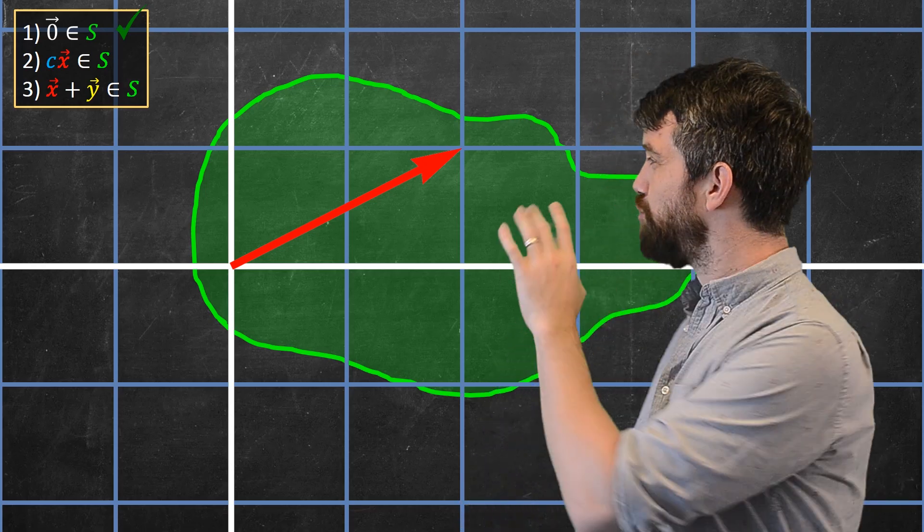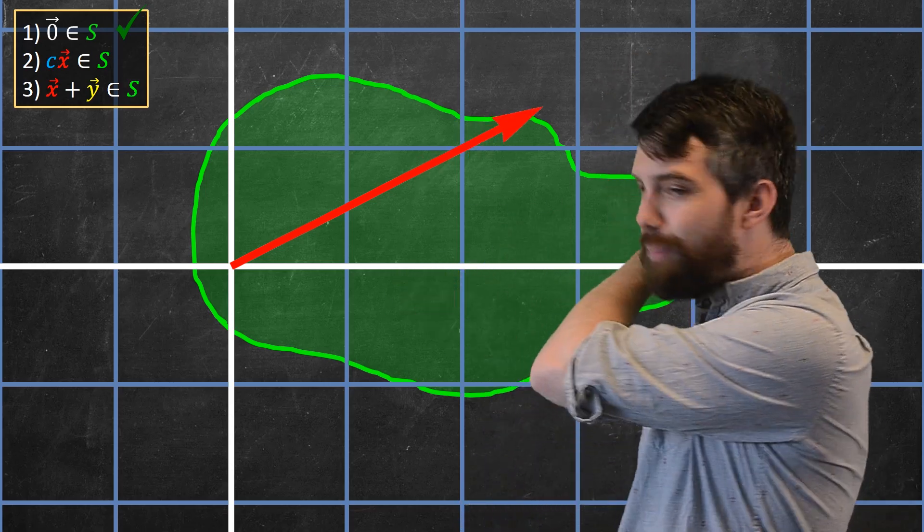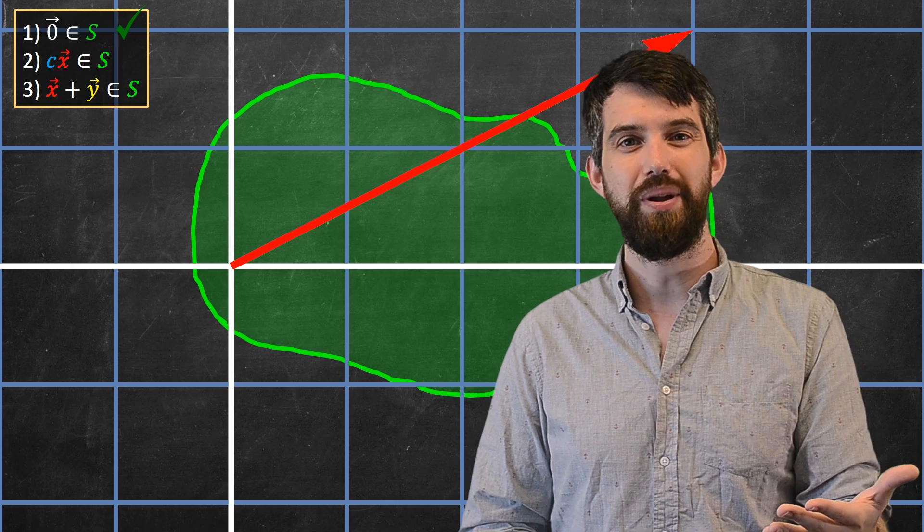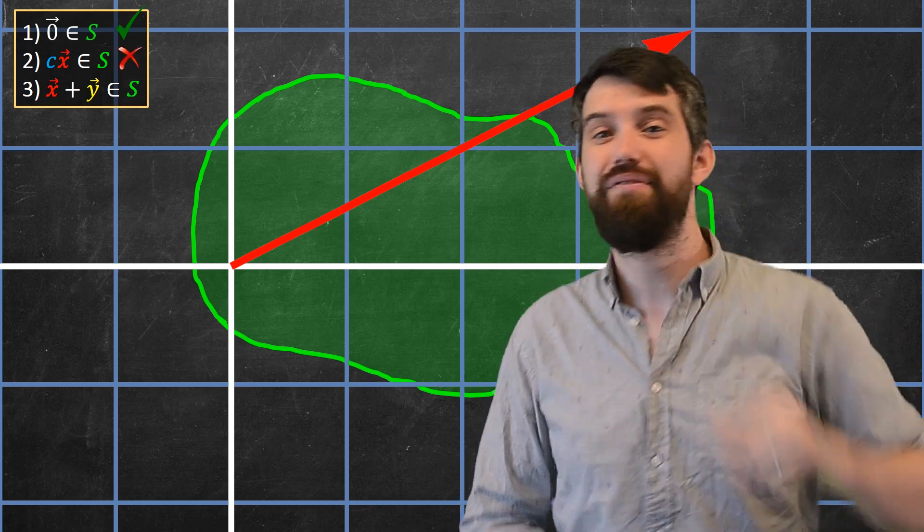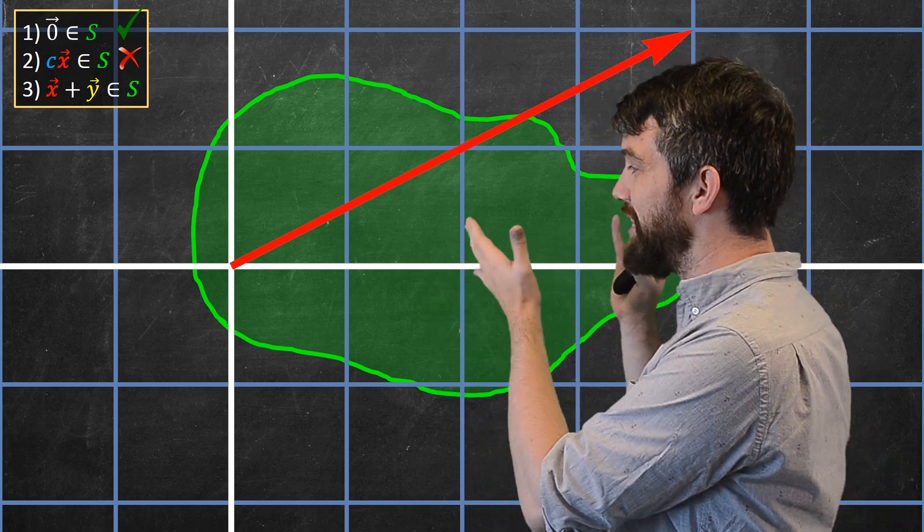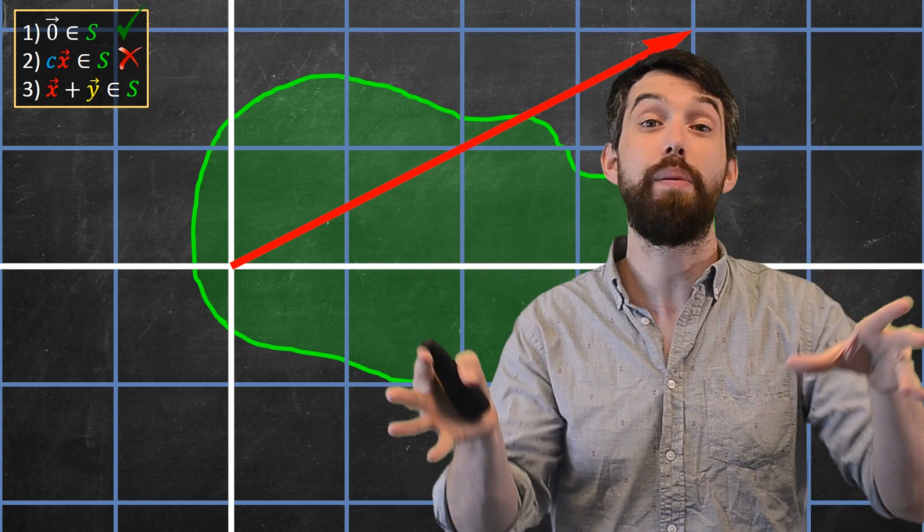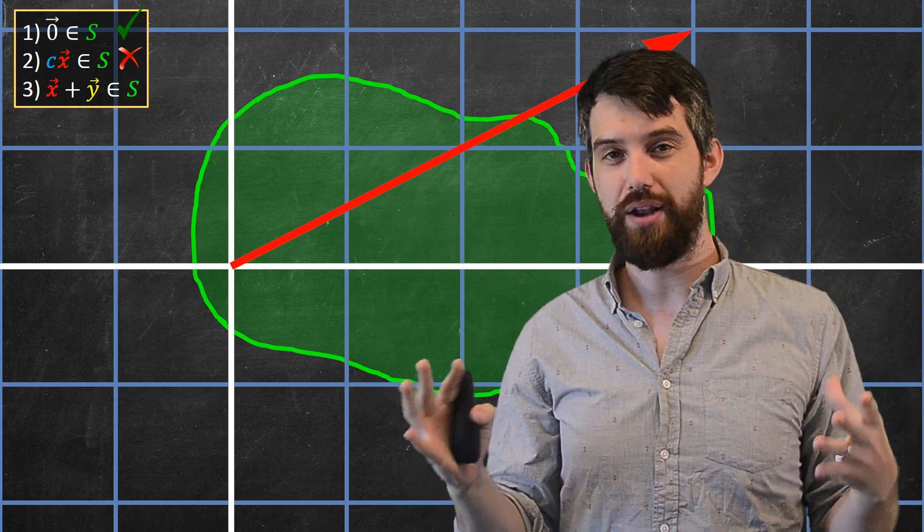Second property. Okay, I have this red vector. Let's multiply it by two. Let's do a scalar multiplication. But now my vector has left the subset. And so I don't have the second property, and therefore this is not a subspace. This sort of random blob I put down is a subset, but not a subspace.